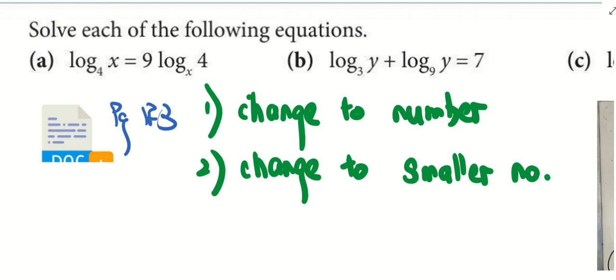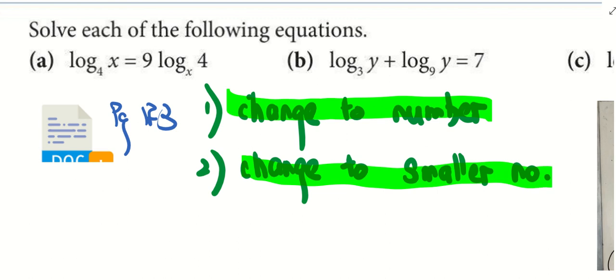So take note, if there is a change of base, whether it's an unknown or a number, I try to change to a number. If there's a choice of two numbers, I try to change to the one with a smaller number. So these are the two terms of rule that I will adopt.